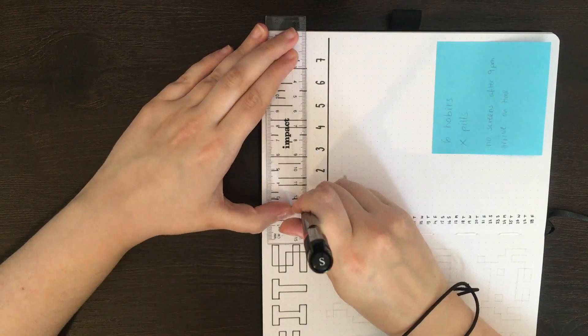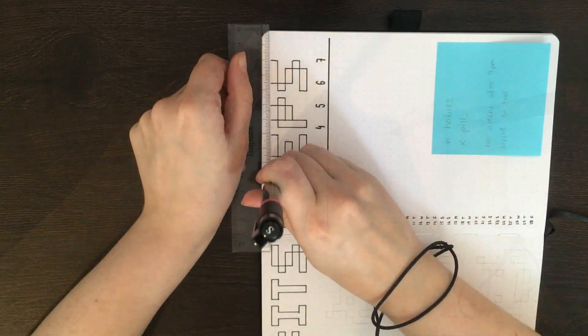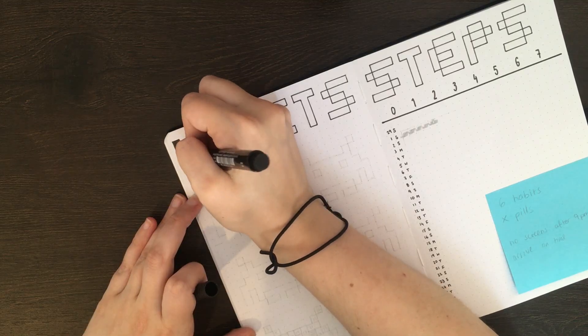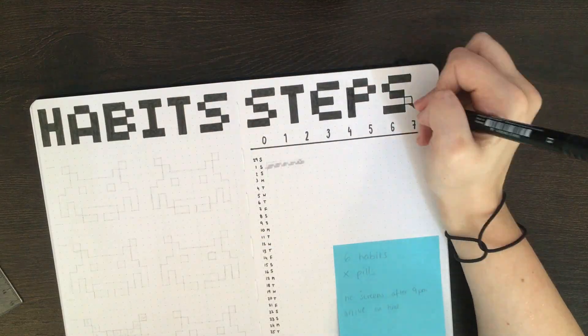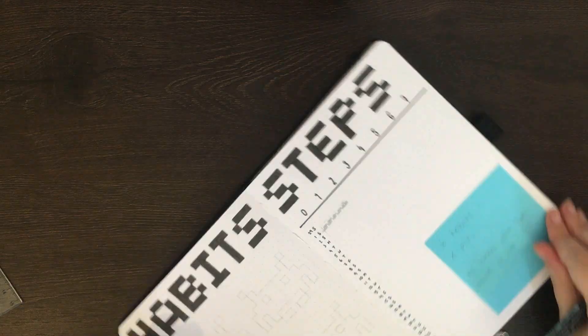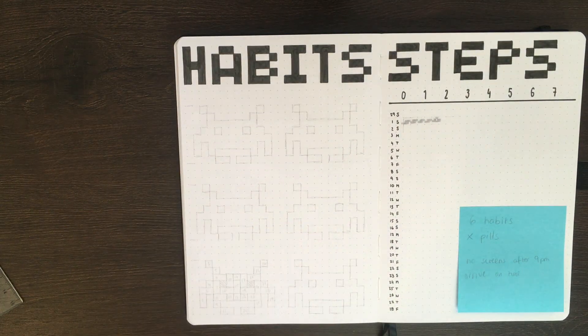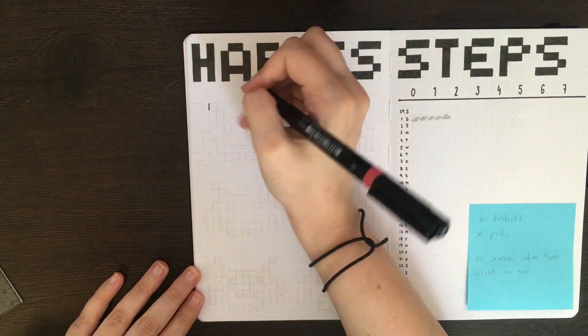In terms of the decorative elements that I had on each of these pages, the games that I decided to use were a snake for the steps tracker, where the length of the snake indicates how many steps I'd done, and for the habits tracker I went with space invaders. So I had an individual space invader doodle for each of six habits that I'll be tracking.